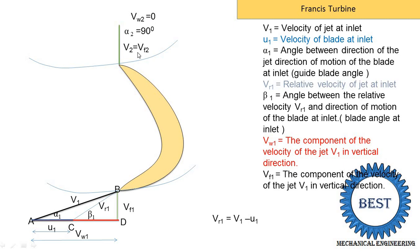So here VW2 is 0 and V2 is equal to VF2. Next we indicate the relative velocity. The line of relative velocity Vr2 makes angle beta 2 with the horizontal direction. This notation for outlet is the same, just instead of inlet we write outlet. This relative velocity line is denoted as line PQ. From P and R we connect, then it indicates the velocity of the blade. Applying the equation of relative velocity, connecting the end points gives velocity of the blade U2 at the outlet. Line PQ is the velocity of the blade at the outlet. This is the complete velocity triangle.